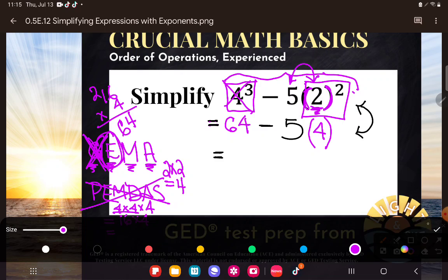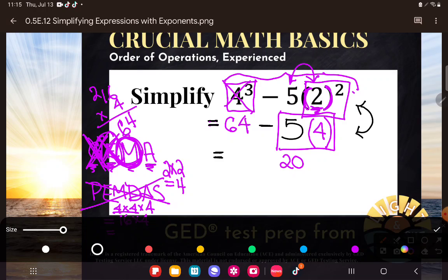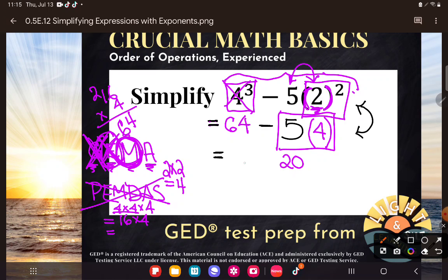So we dealt with all the exponents. And now it's time and only now to do the multiplication implied by these parentheses. So there's the multiplication. 5 times 4 is 20. And once again, I'm going to be a good secretary so as not to mess with my own head by not writing down what I need to do. So I'm going to drop anything I haven't used. I haven't used the minus and I haven't used the 64.